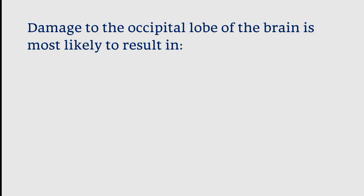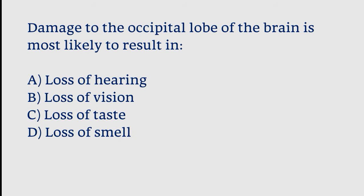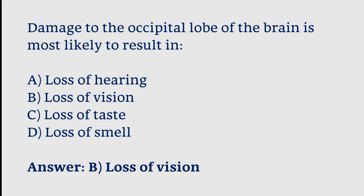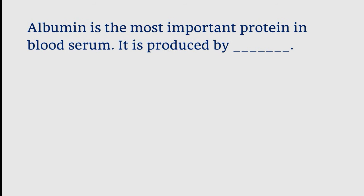Damage to the occipital lobe of the brain is most likely to result in: loss of hearing, loss of vision, loss of taste, or loss of smell. The correct answer is option B. Damage to the occipital lobe of the brain is most likely to result in loss of vision.